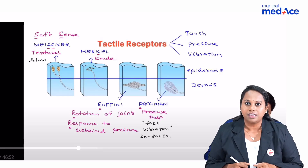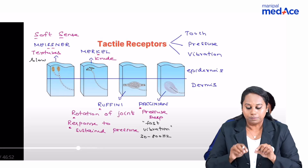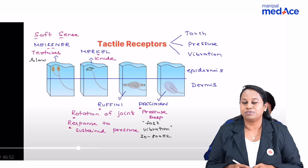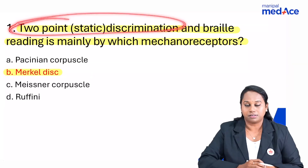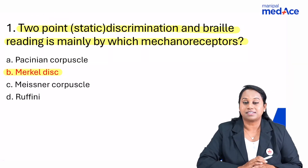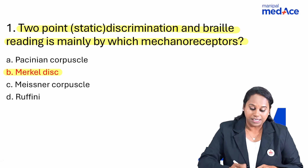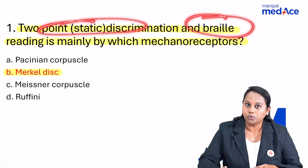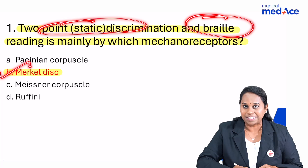What is Braille type of reading? The reading book for blind people has points, edges, and corners — these people read by touching those points and corners, which is nothing but crude touch and also two-point discrimination, specifically static discrimination. Static means slowly adapting type of receptors. So the answer for both is Merkel disc.